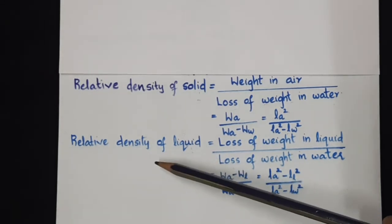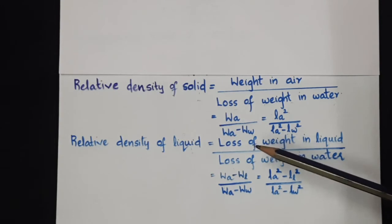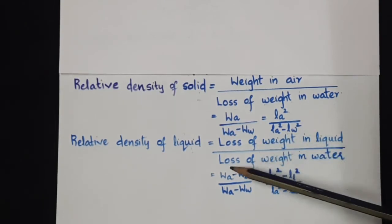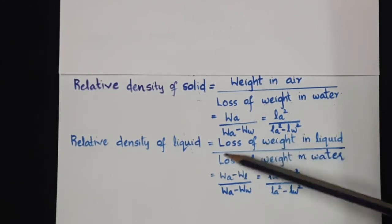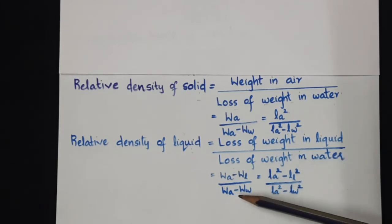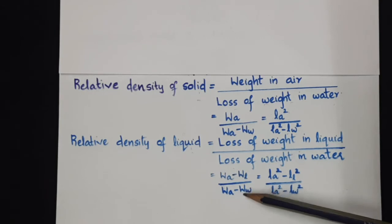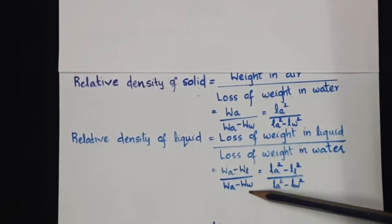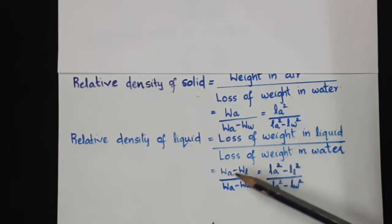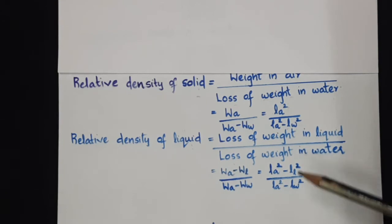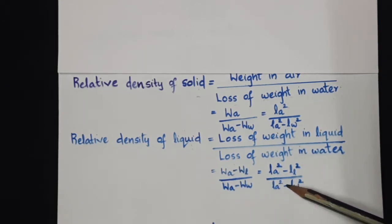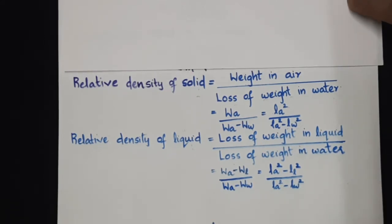Similarly, if we want to evaluate the relative density of a liquid, it is defined as loss of weight in liquid divided by loss of weight in water. That is WA minus WL over WA minus WW, which is weight in air minus weight in water. Since weight is directly proportional to the square of the loop length, this equation becomes LA square minus LL square divided by LA square minus LW square. With this theory, we can evaluate the relative density of both the solid and the liquid.